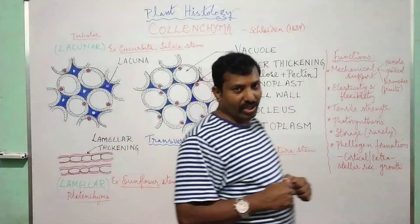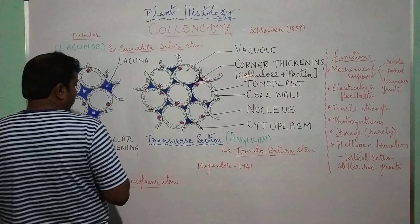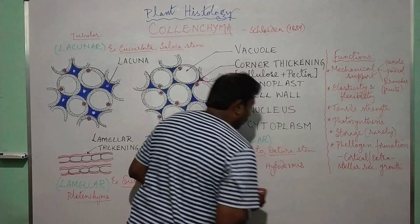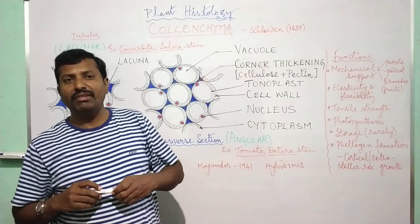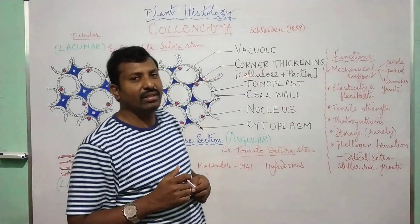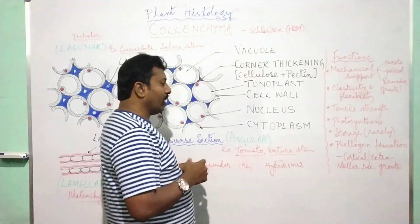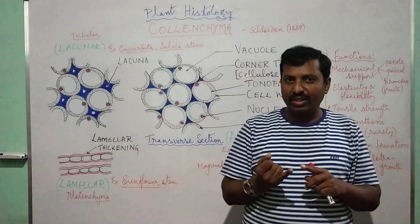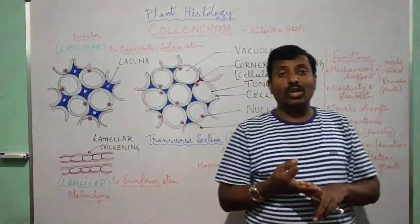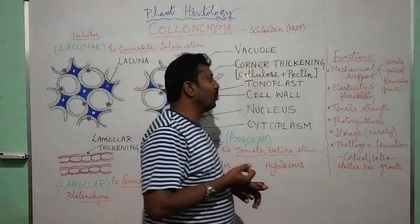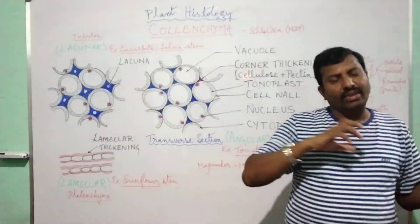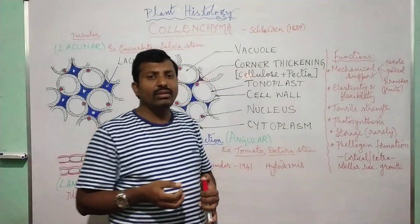Where is Collenchyma located in plants? It is usually located in the hypodermis. Generally it is found in the hypodermis, that is why we call it as hypodermal origin — just exactly below the epidermis, about 2 to 3 layers in the plants. Collenchyma is also present in the petiole, that is the stalk of the leaf, pericycle, stalk of the flower, the peduncles, stalk of the inflorescence, and also in the branches of the plants including the stalk of the flowers and fruits.